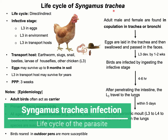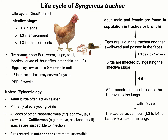The life cycle of Syngamus trachea can be direct or indirect. In the case of an indirect life cycle, there is involvement of transport hosts such as earthworms, snails, sludge beetles, larvae of different houseflies, and even chickens. The infective stage could be L3 within the egg, L3 in the environment, or L3 in the transport host.